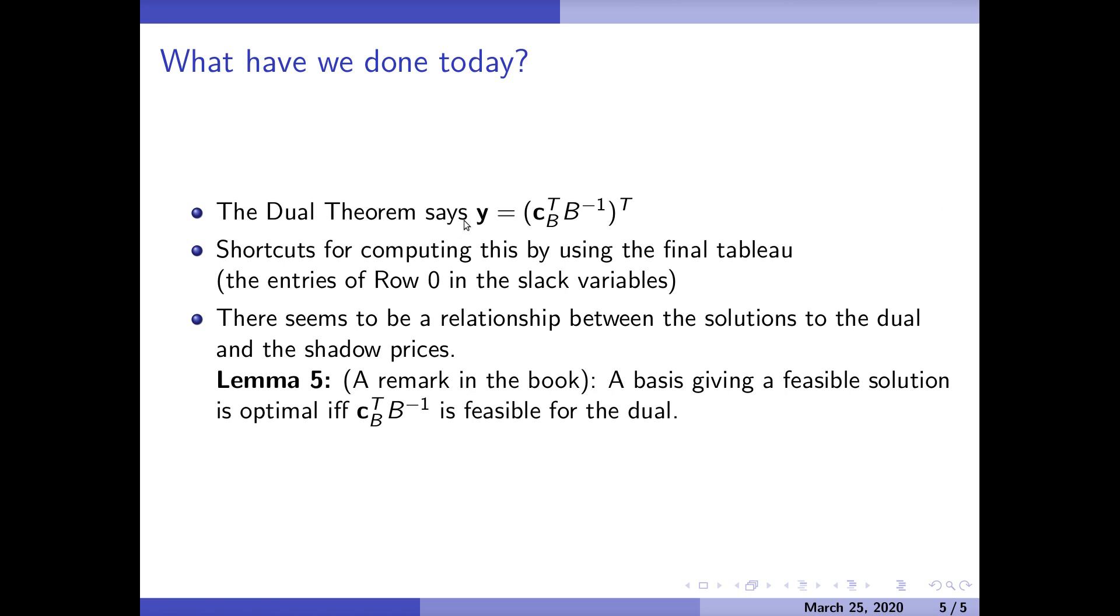The dual theorem says that y equals c_B transpose B inverse transpose. We have some shortcuts for computing that. There seems to be a relationship between the solution to the dual and the shadow price, and that's what we're going to look at next. But I just wanted to mention one quick lemma - it's remark one in the book - that says a basis giving a feasible solution is optimal if and only if c_B transpose B inverse is feasible for the dual. We're going to take a look at that in the next video. For now, we'll stop there.